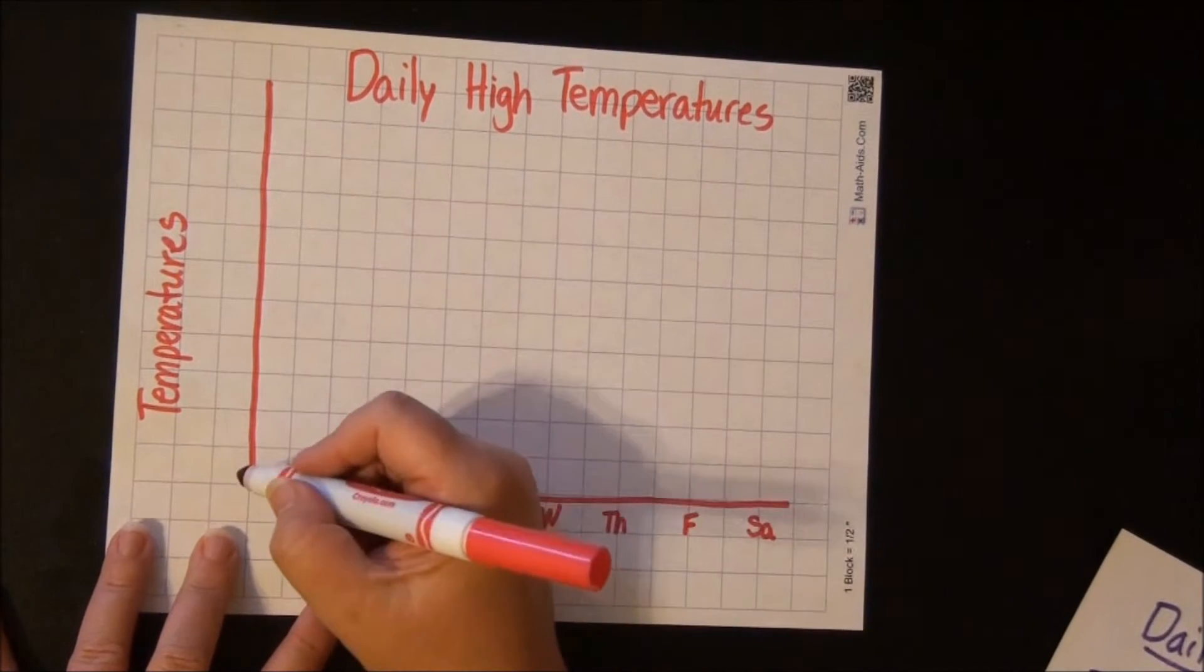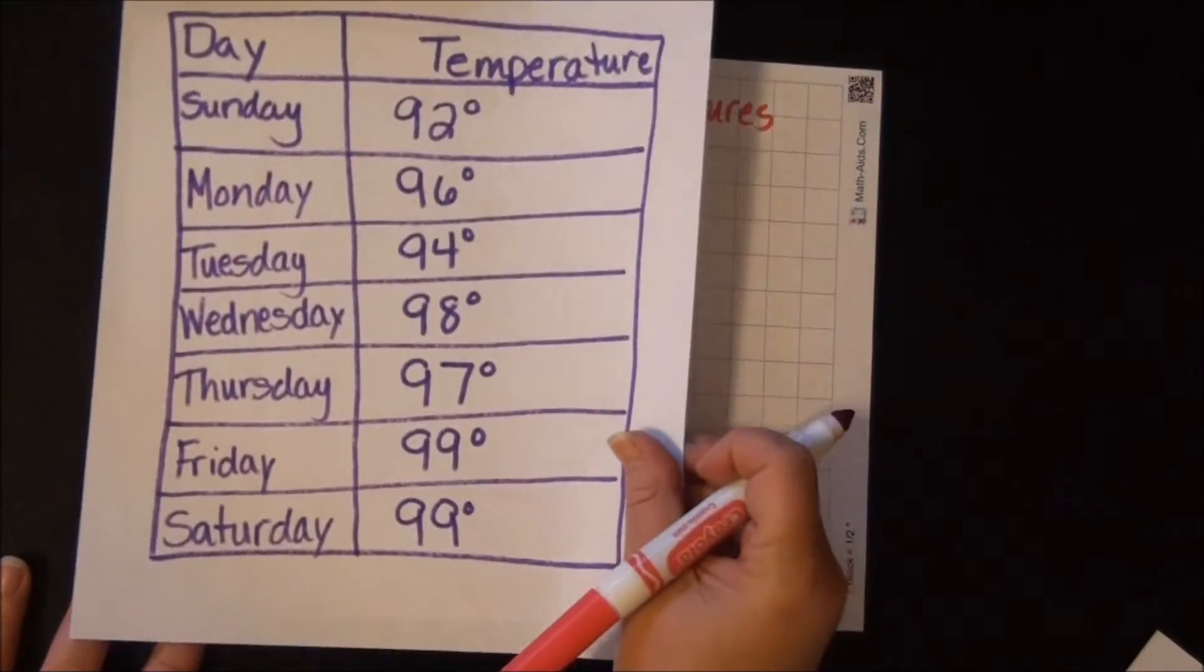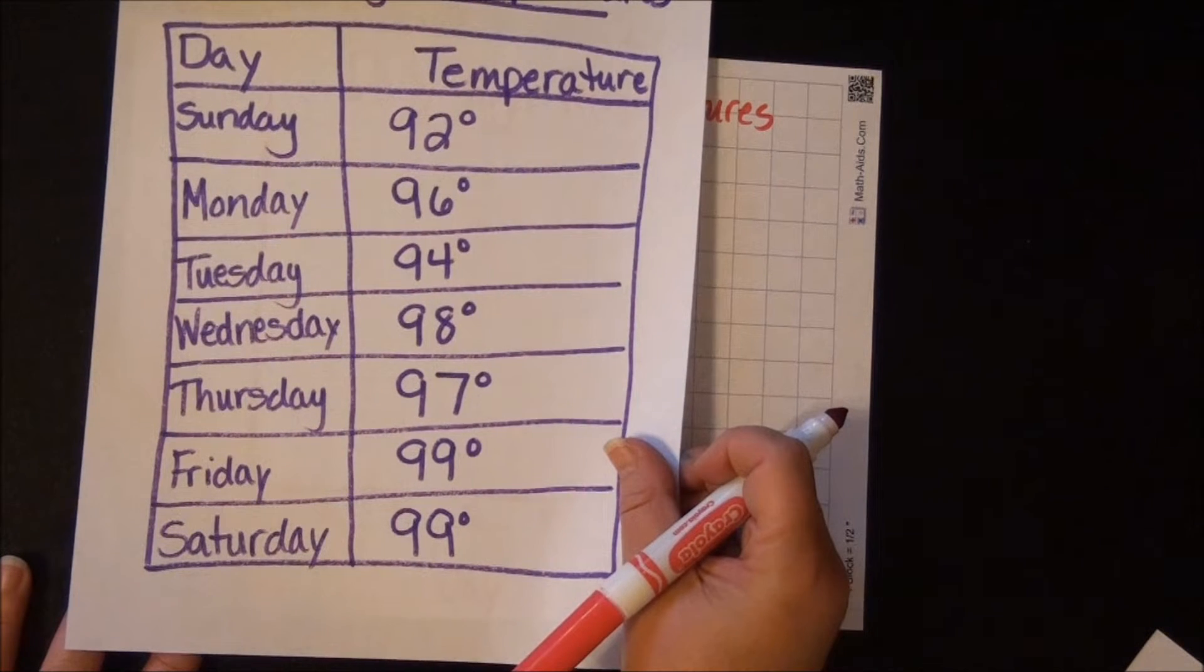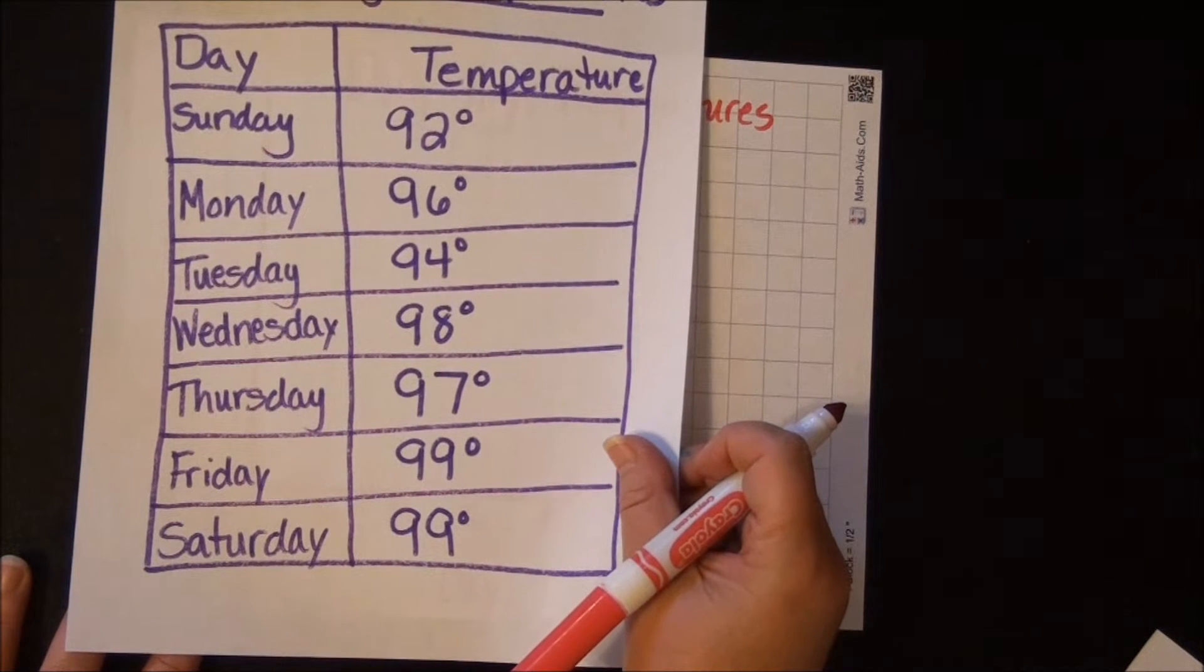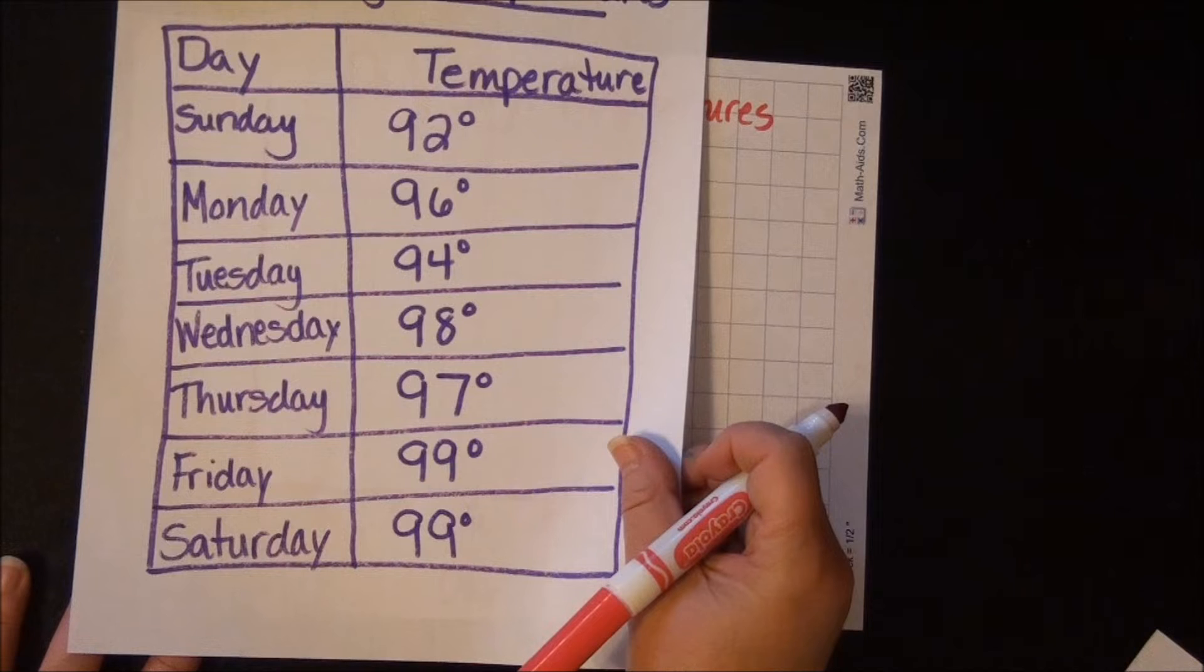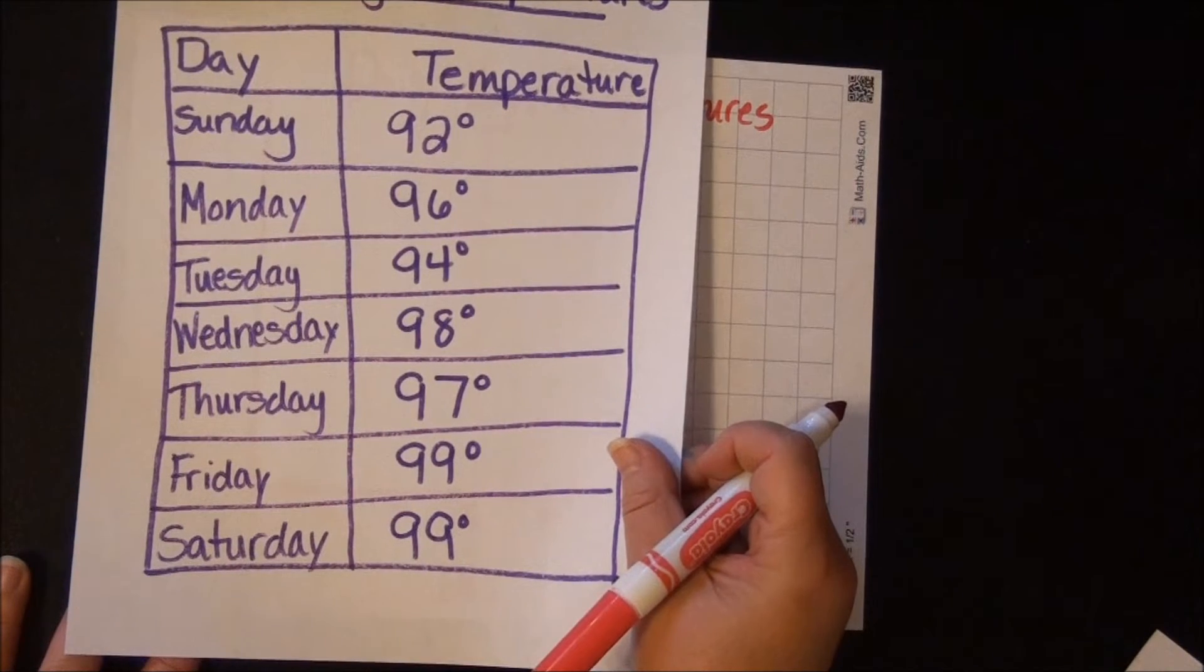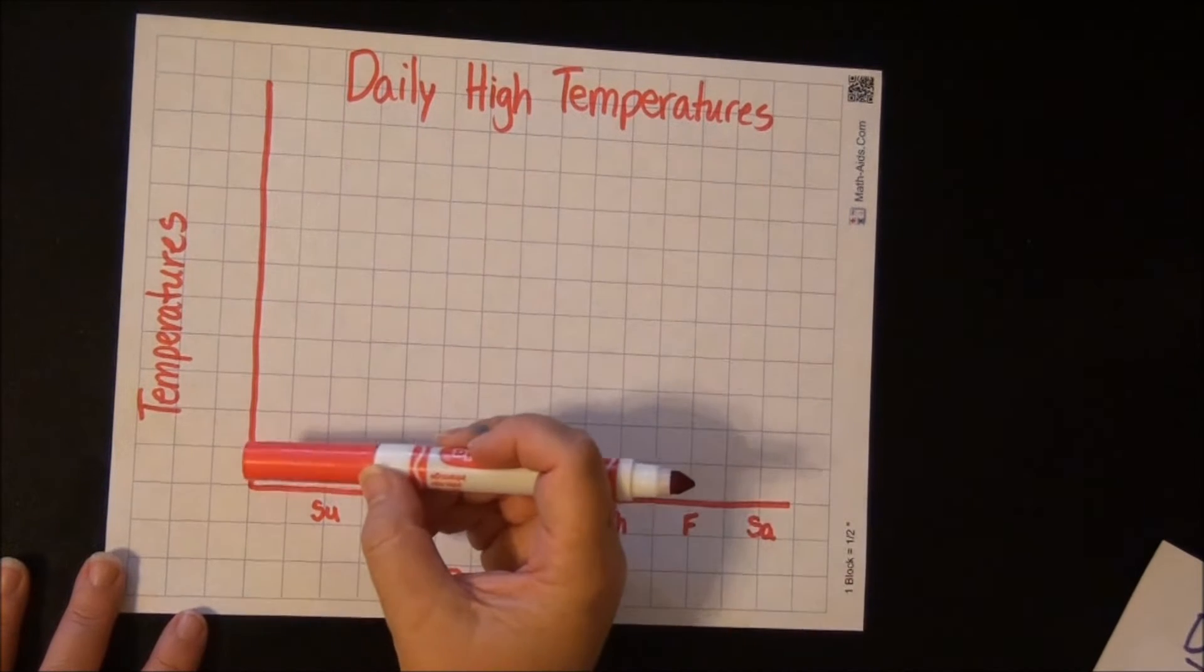So now we're going to put temperatures. Our highest temperature on our chart is 99, and our lowest temperature is 92. Now we don't need to put 92 on the bottom line and 99 on the top line. It's often good to go between 10s, like do 90 to 100, or if it went lower 80 to 100. So I think we'll go 90 to 100, and we're going to do one temperature per line.